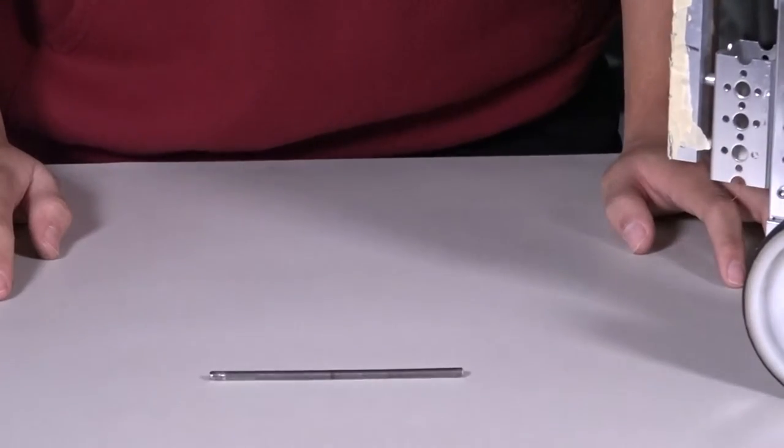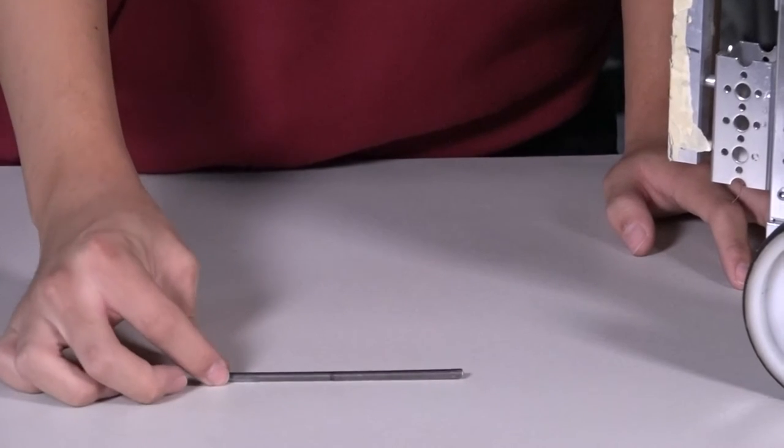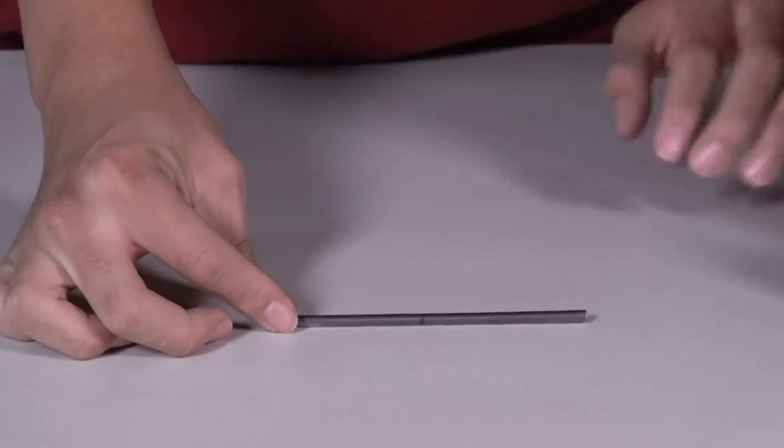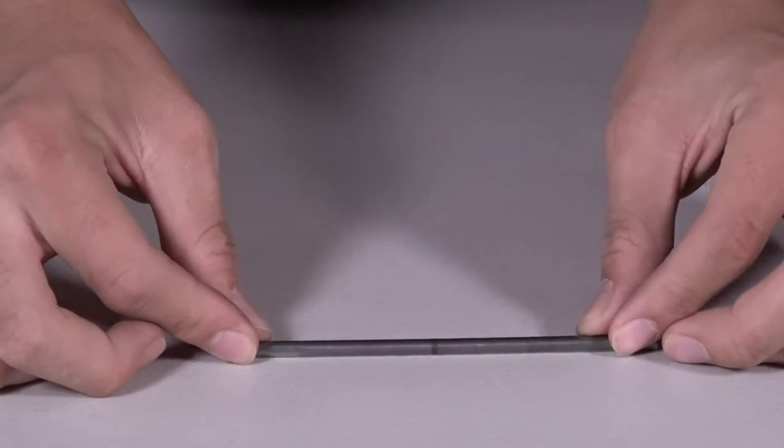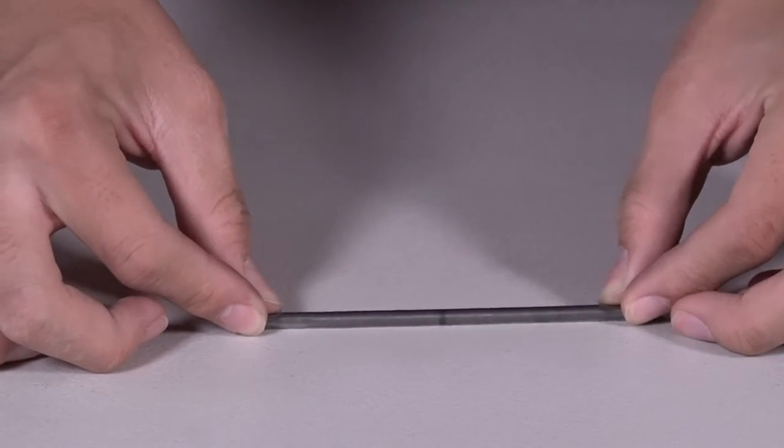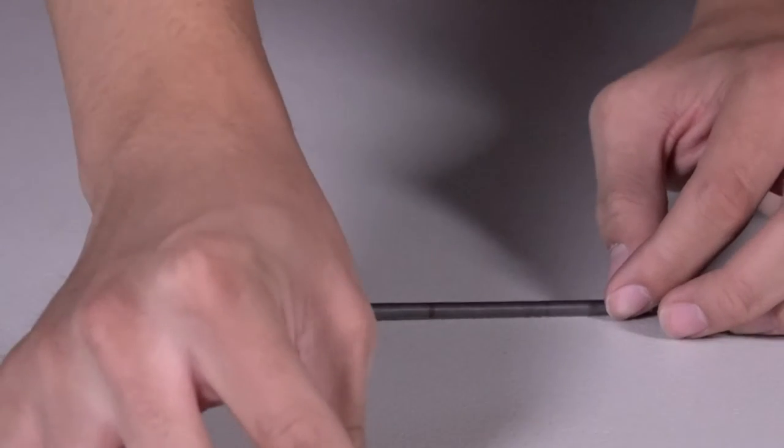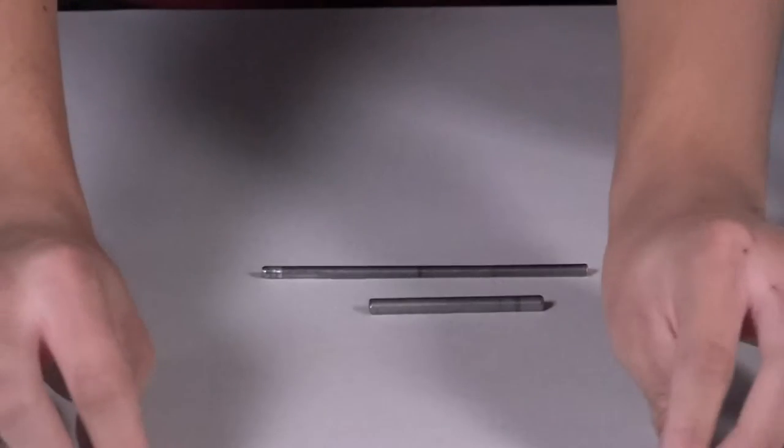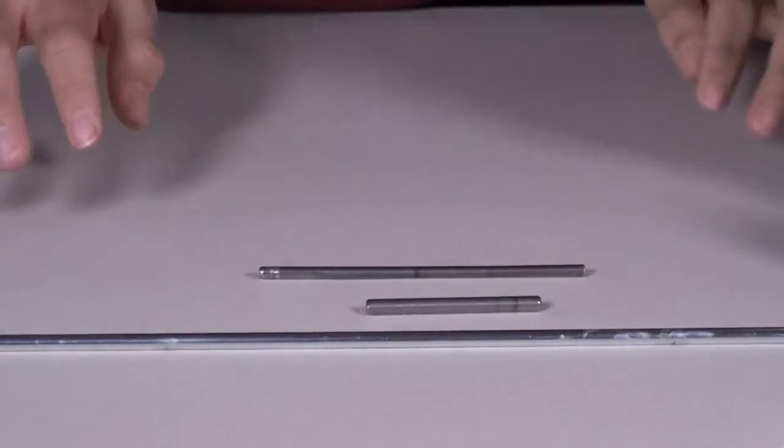Tip number two, the standard Tetrix kits give you these 4.75 millimeter axles but we noticed that throughout the competition these thin axles bend which causes problems for the drivers and the functionality of the robot. That's why we like to use these thicker 6 millimeter axles from the Tetrix Prime kit or these even longer 6 millimeter axles from Andymark.